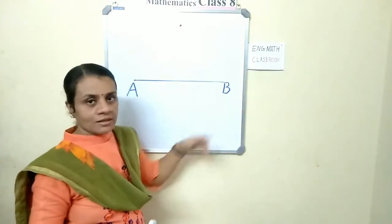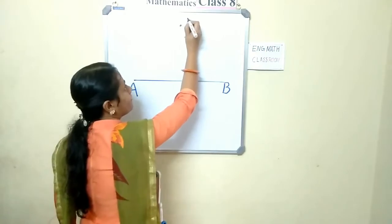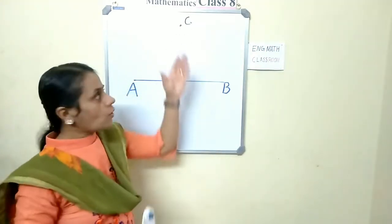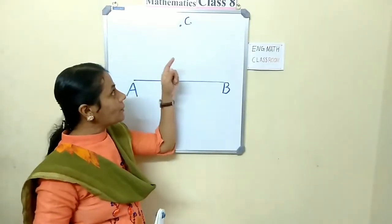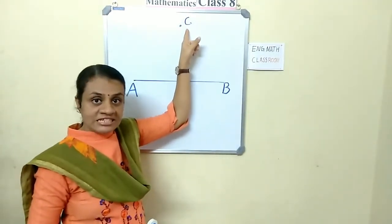Mark AB. See a point, mark it as C. This point is away from AB. Now, you have to draw a perpendicular from C.